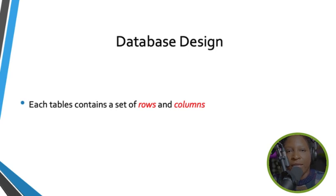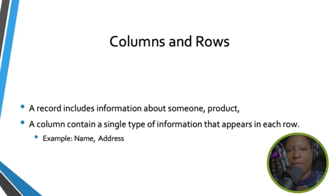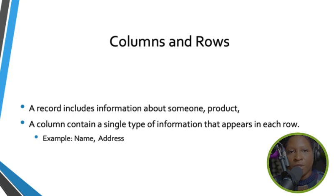An important thing about a database is knowing the difference between rows and columns. Each table consists of columns and rows. A row is a record — for example, John's information is a record. A column contains a single type of information that appears in each row, such as a name or address column.